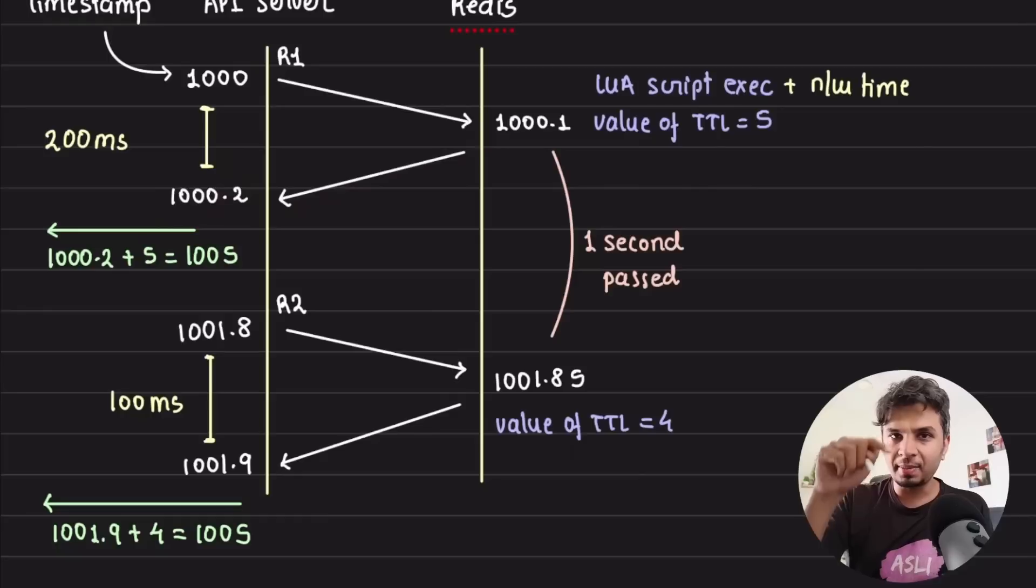Now let's say the next request came at 800 milliseconds past 1001. So 1001.8—at this timestamp, the next request is initiated from your API server to your Redis. And now let's say this request was relatively faster and it reaches in, let's say, 50 milliseconds to your Redis server, and then it executes. Half execution happens in 50 milliseconds. So roughly the entire time from API server to Redis and back is, let's say, 100 milliseconds. So 1001.8 it reaches to Redis.